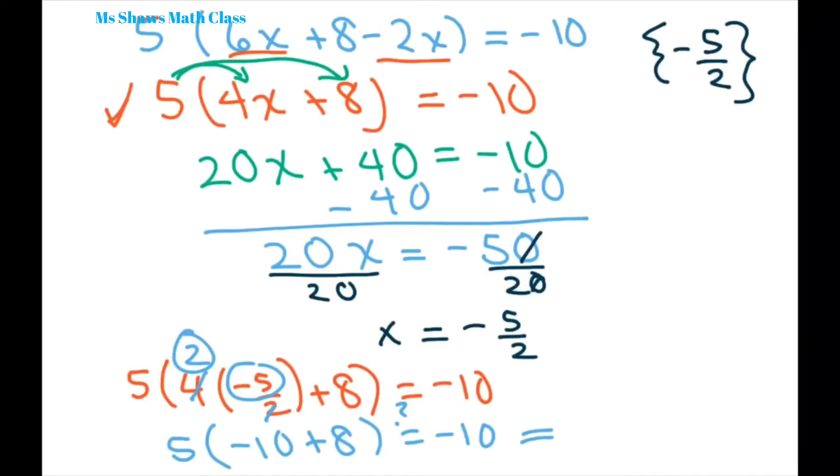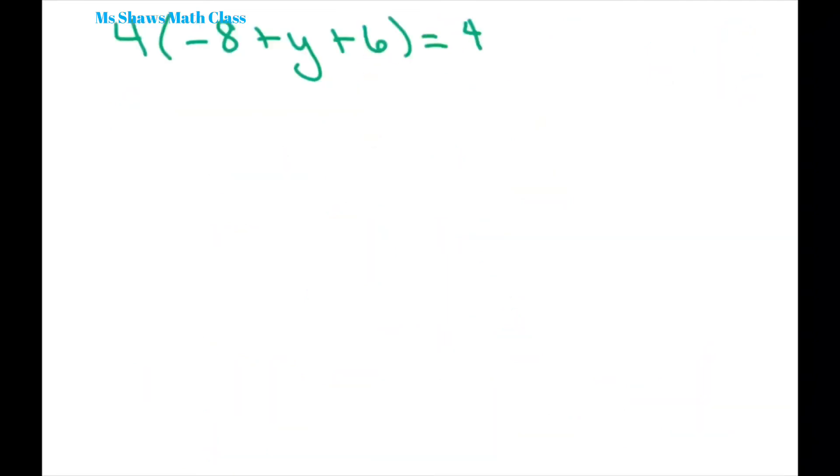So we're going to move it over here. We have five times negative two equals negative 10 or negative 10 equals negative 10. So it does check out. And for the last one, we're going to go ahead and collect like terms in here.